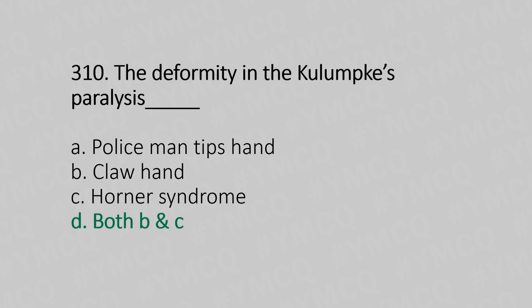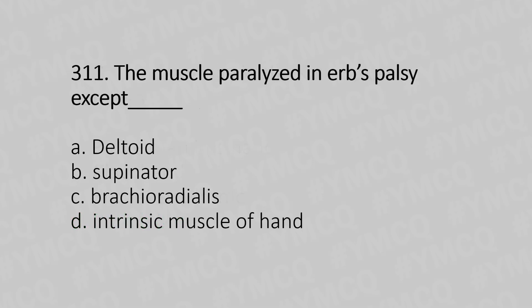Question 311: The muscle paralysis in Erb's palsy — except — Option A: deltoid. Option B: supinator. Option C: brachialis. Option D: intrinsic muscles of the hand. The answer is Option A, deltoid.